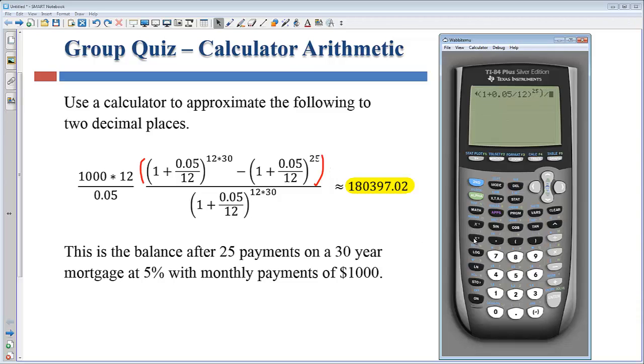Then divided by the bottom. So left parentheses one plus zero point zero five divided by twelve in parentheses raised to twelve times thirty. And if I did this right and didn't make any silly mistakes when I hit enter I should get out that number.